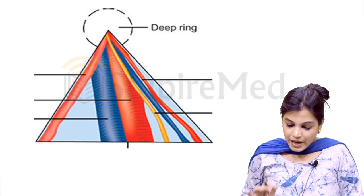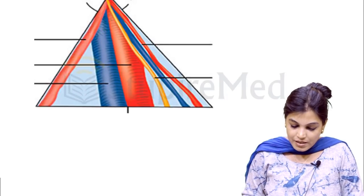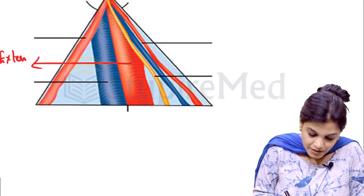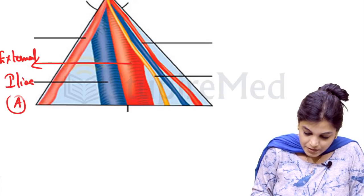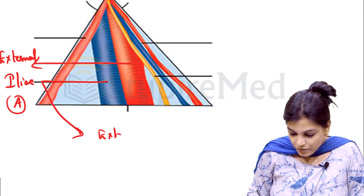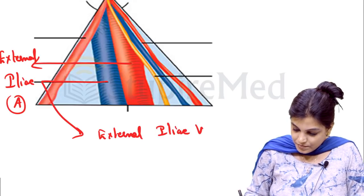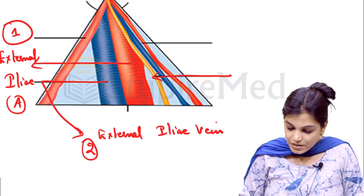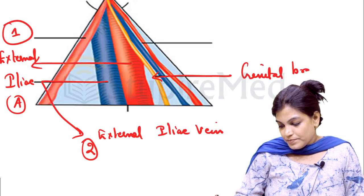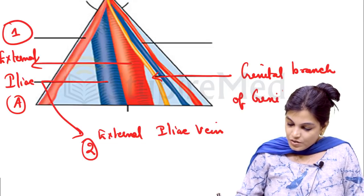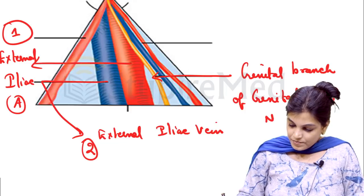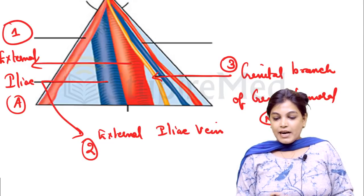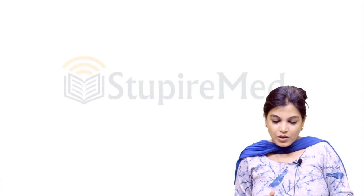Now for the contents of the triangle of doom: the red structure is the external iliac artery, the blue structure is the external iliac vein, and the yellow structure is the genital branch of the genitofemoral nerve. So the three important contents are the external iliac artery, external iliac vein, and the genital branch of the genitofemoral nerve.